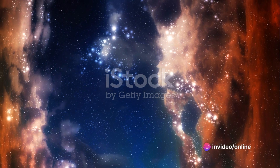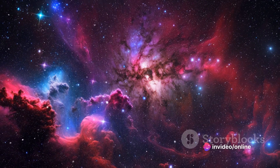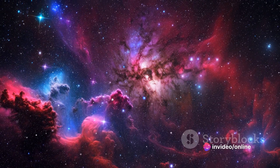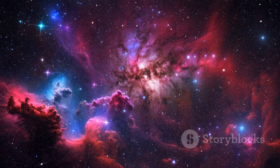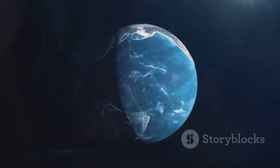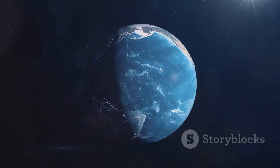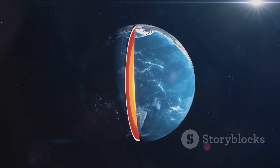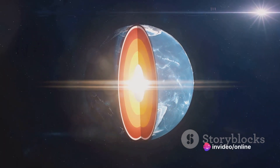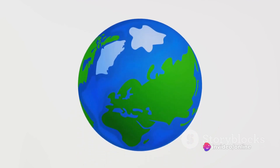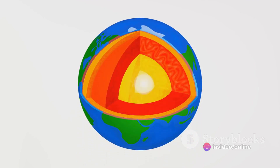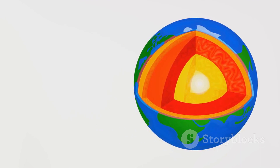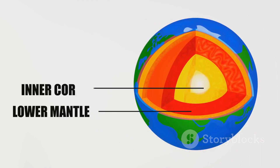Our Earth story begins about 4,540 million years ago, not as a solid planet, but as a cloud of dust in the sky known as a nebula. Over time, this nebula condensed and formed the Earth, a world initially brimming with heat. However, as millions of years passed, Earth gradually cooled down on the surface, while its core remains a scorching furnace, estimated to be around 6,000 degrees Celsius.